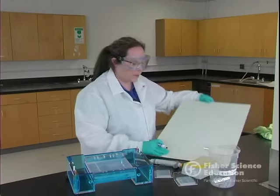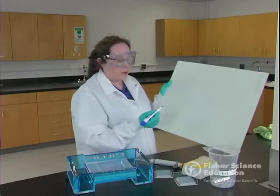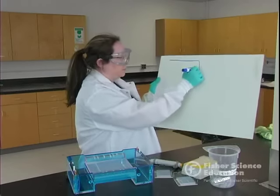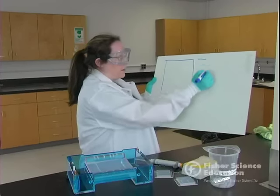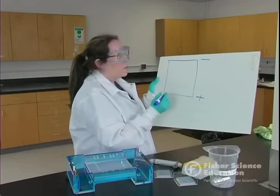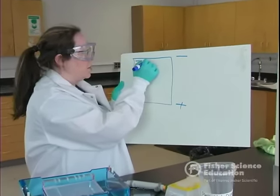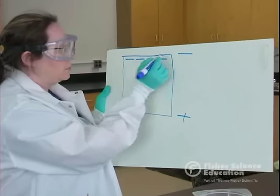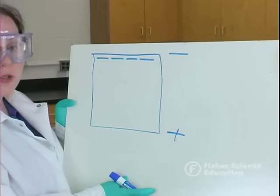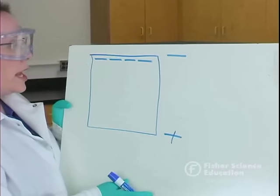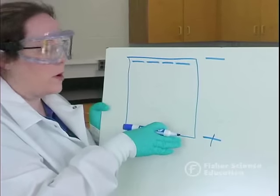We're going to draw a gel and I'll label everything. If this is the negative end and the positive end, remember we're going to load our DNA at the negative end because DNA samples are negatively charged. Those represent the wells, and as the electrophoresis reaction is occurring, the negative current here is going to push the samples toward the positive end.